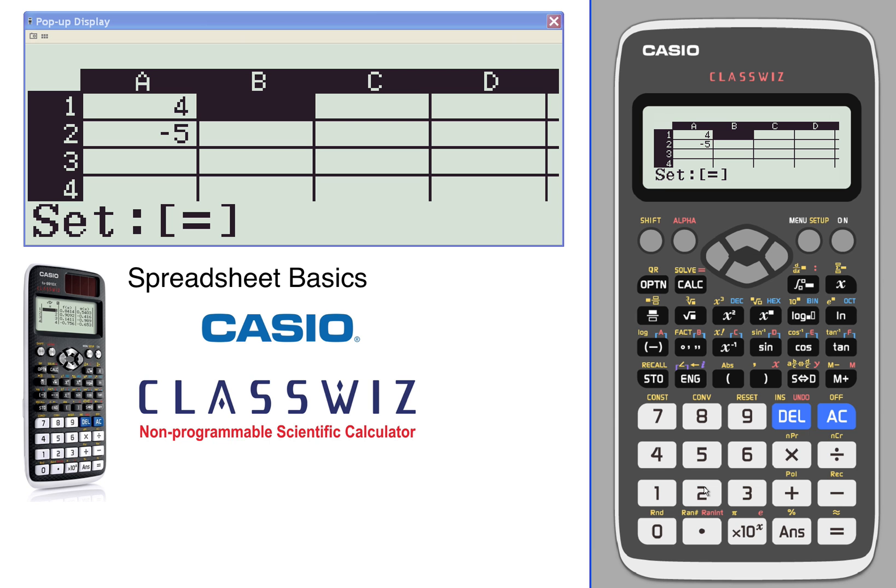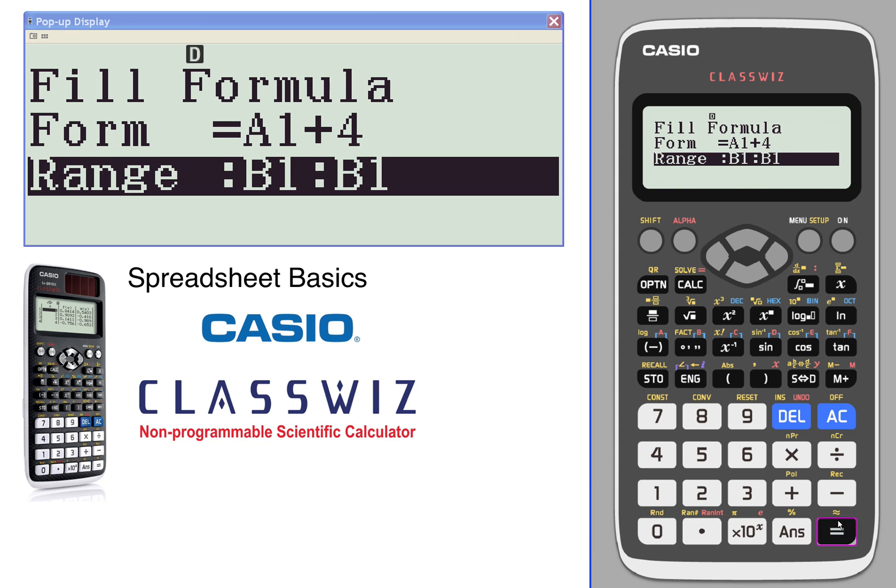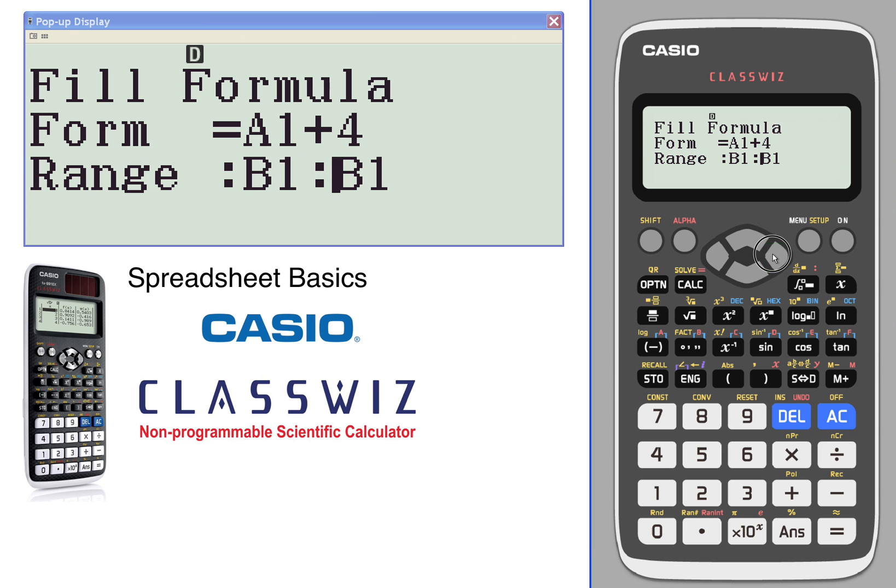And then I'm going to add 4 to it. I'm going to start with B1 and I will end with B3. So delete that, press 3.